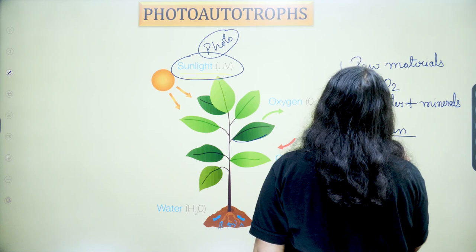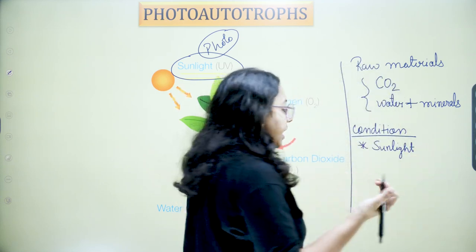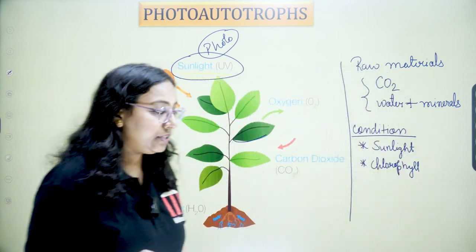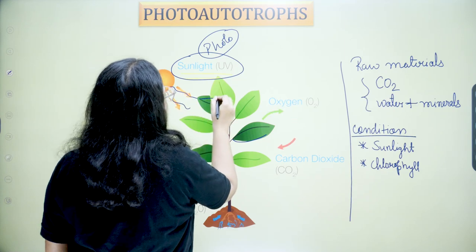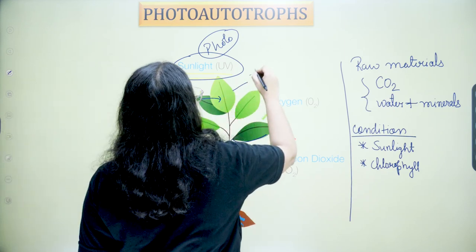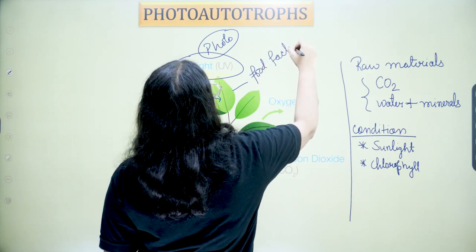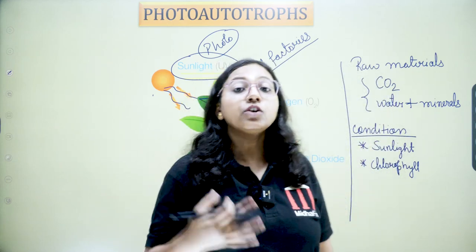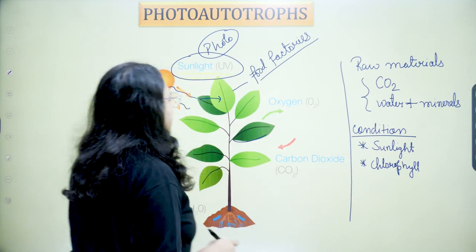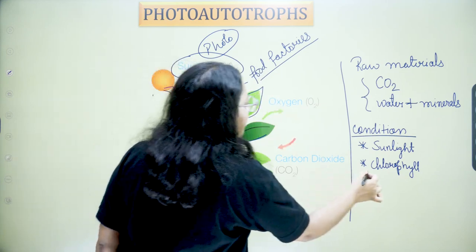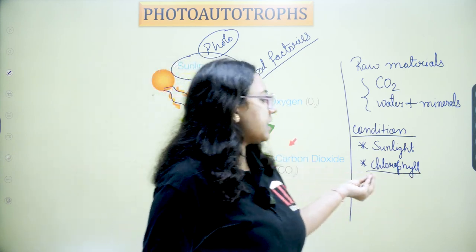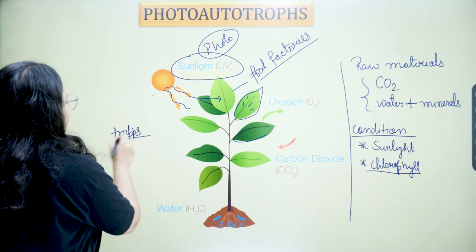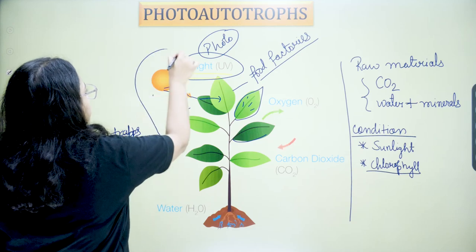Sunlight comes to the leaves — photosynthesis basically happens in the leaves, which is why leaves are called food factories. It can also take place sometimes in stems and roots. Leaves have chlorophyll, a pigment that gives the green color. The major role of this pigment is to trap the sunlight. It traps the sunlight and captures its energy.